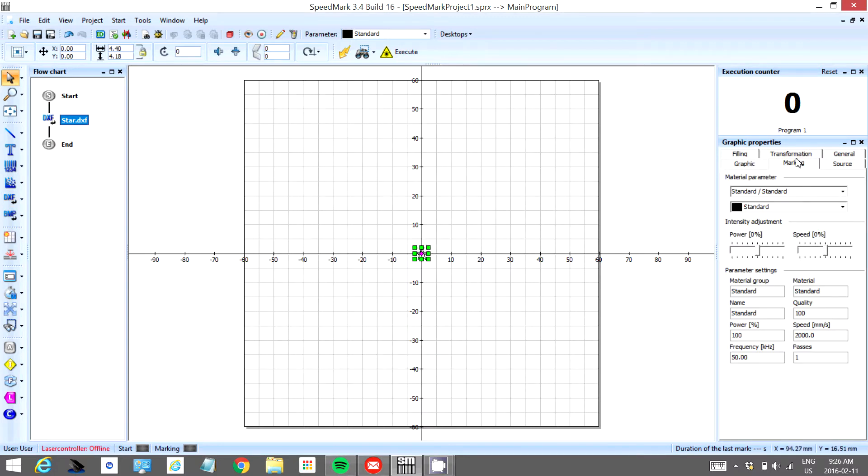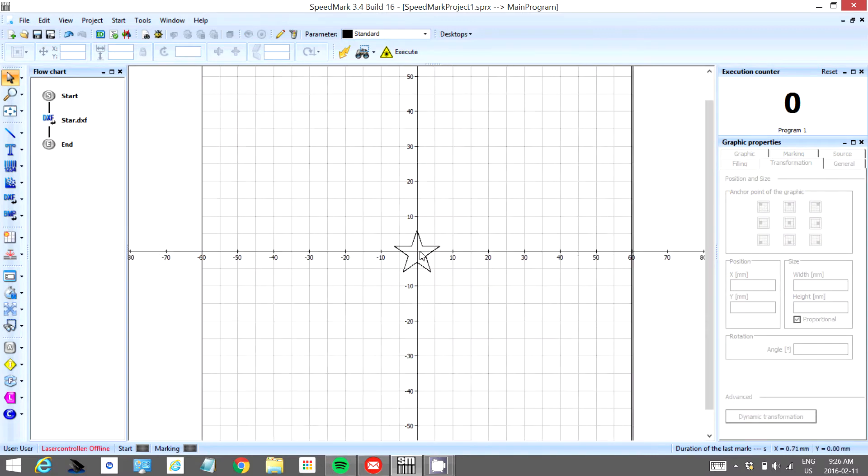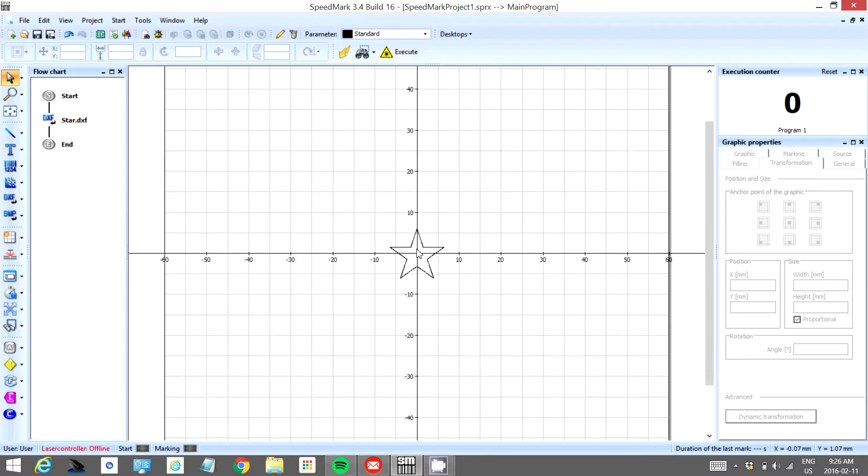And I'm going to make it a little bit bigger by making it a half an inch or 12.7 millimeters. So there's our star sitting directly there in the middle of our screen.